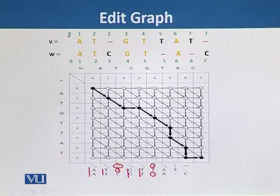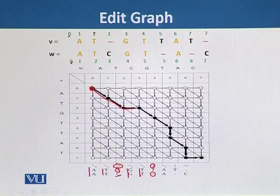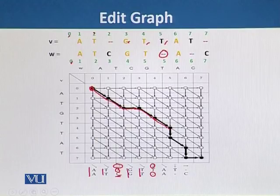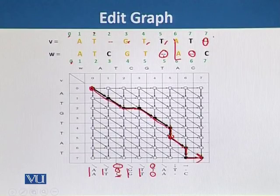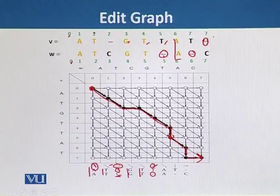Starting from 0, 0, we move: 1, 1, 2, 2, 2, 3 — this one horizontal. Then again diagonals because they are identical. Then there is a missing in W, so we move in that direction. Then again identical diagonal, missing in W again in that direction, and missing in V in this direction. By following the alignment of the strings, we can follow the path in an added graph using diagonal, horizontal, and vertical arrows.